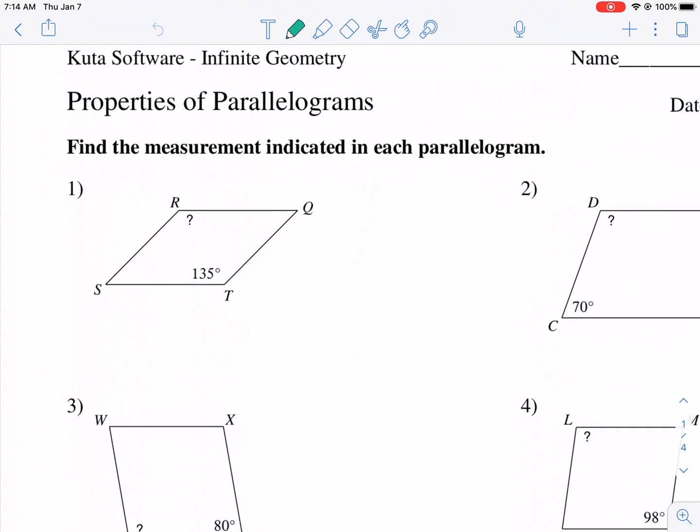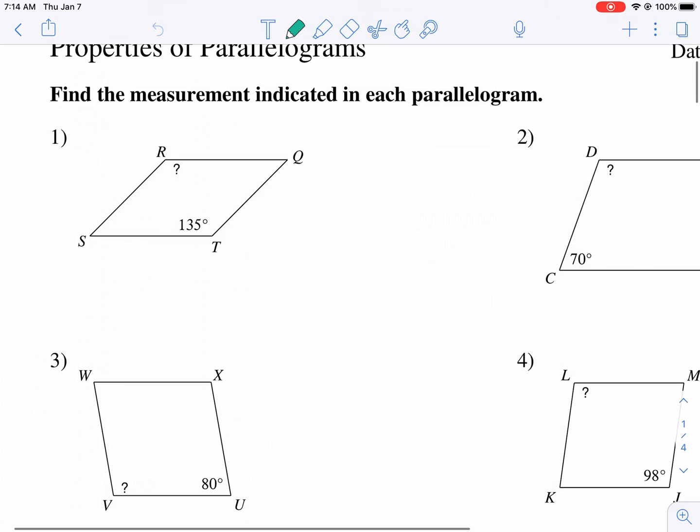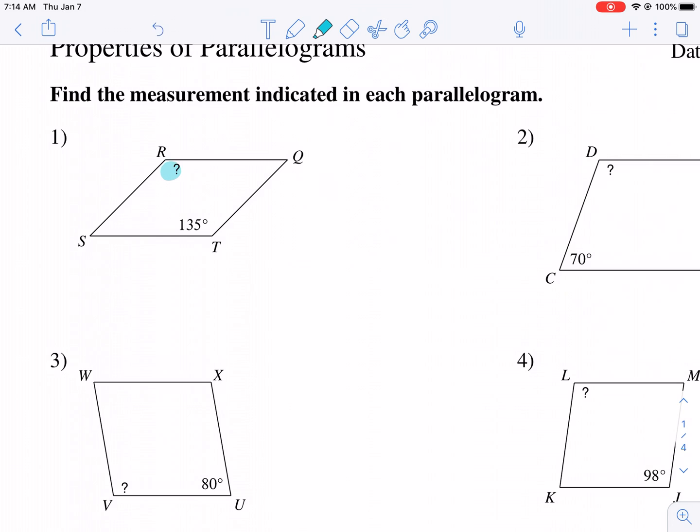So it's asking us to find the measurement indicated in each parallelogram. One of the first properties we're going to find out based on number one is that opposite angles, that means angles that don't share a side. So if you're looking here,